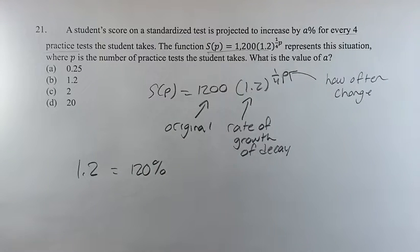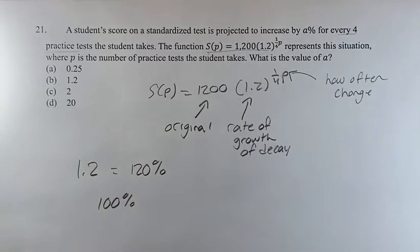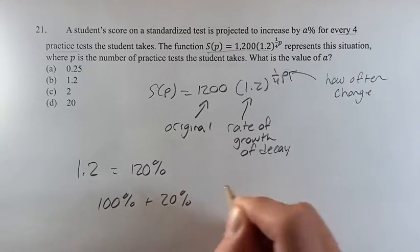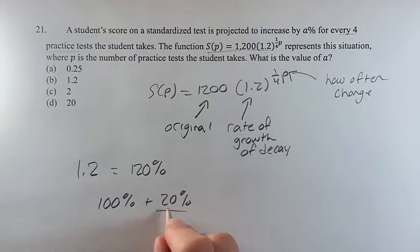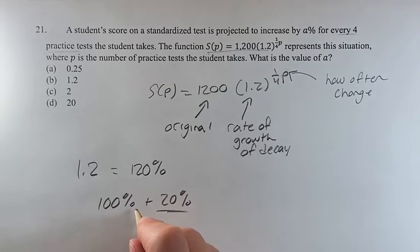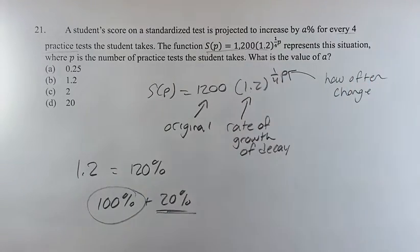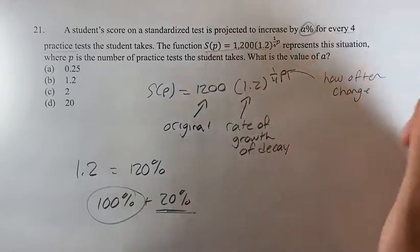So what does this actually correlate to? Well, 100%, which is the time last time, plus 20%, which is going to be our increase. And this is actually the value we're looking for, since it's given that we already are getting the score that we got last time, and then it's increasing by this amount into the next time after four practice tests. So it's going to be an increase of 20%, which is what this little a is representing here.